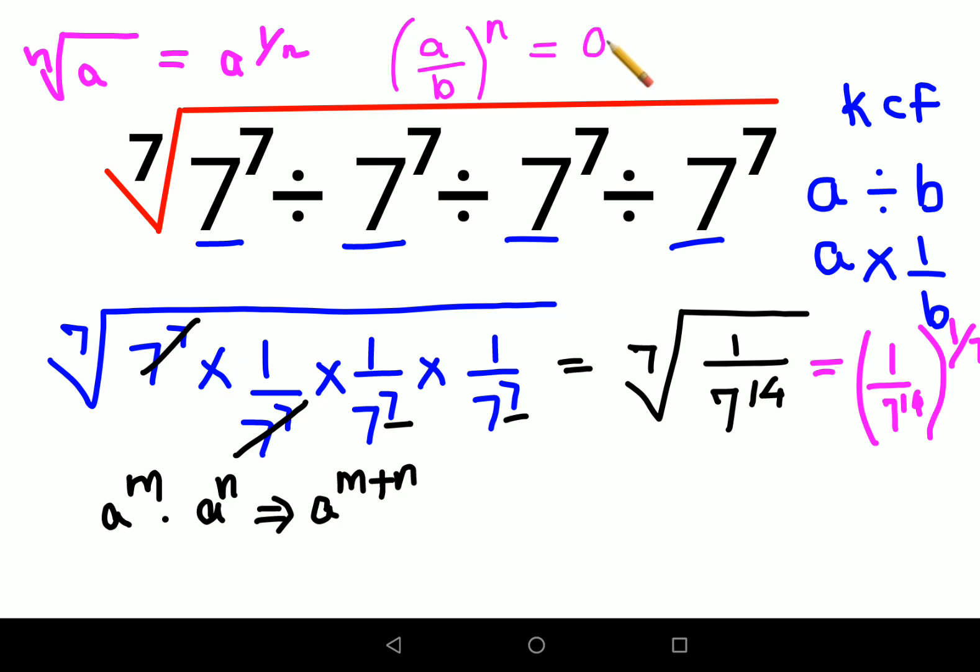you can split it: the numerator A gets raised to n and the denominator B also gets raised to n. So here I can say 1 raised to 1 upon 7 in the numerator, and 7 raised to 14 the whole raised to 1 upon 7 in the denominator.